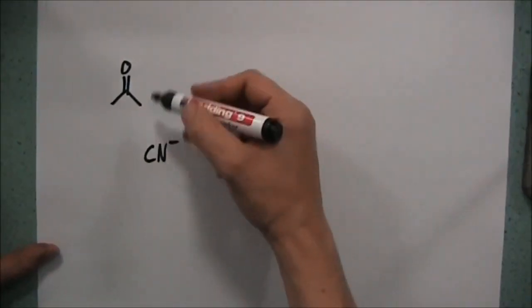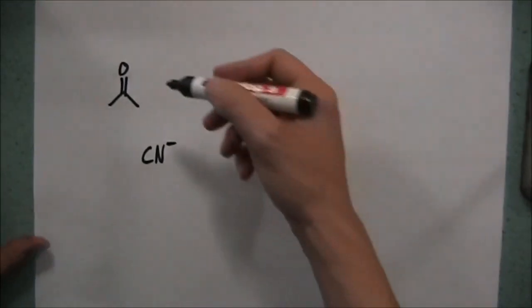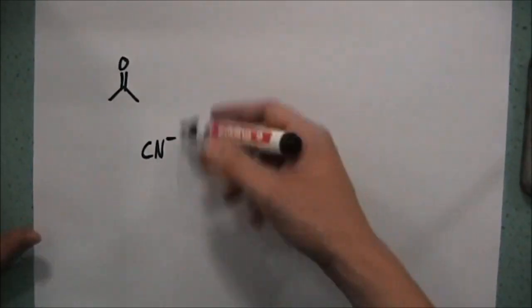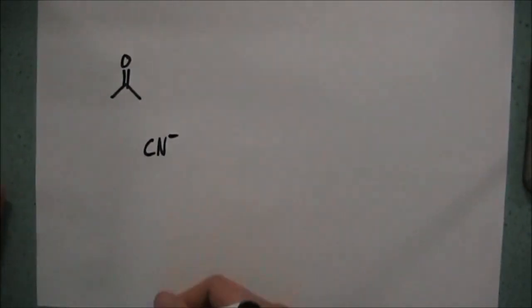The second example is to take a ketone or an aldehyde again, which might be something like propanone, and we're going to react it with a cyanide ion. Now this is usually sodium cyanide. You can use hydrogen cyanide, but it's incredibly toxic and quite dangerous to use. It smells of almonds. So if you smell almonds in a lab, run. Incidentally, the other chemical that smells of almonds is benzaldehyde. So in that case you don't have to run.